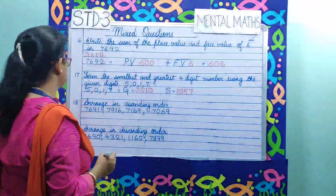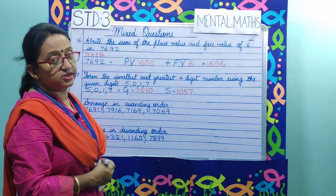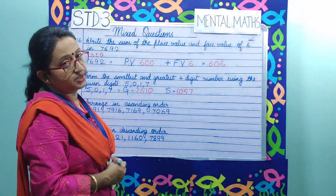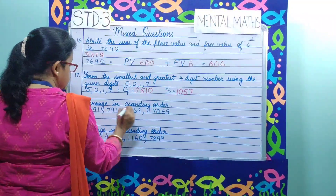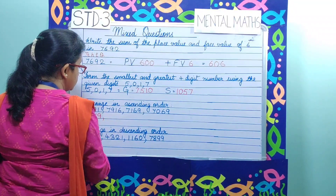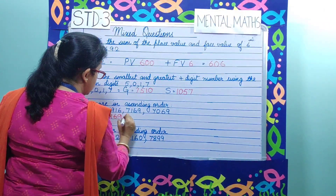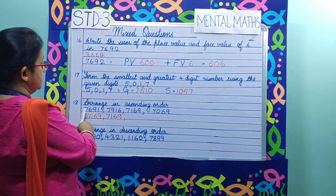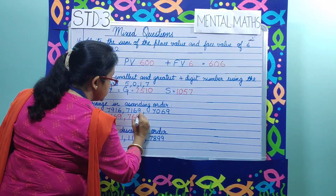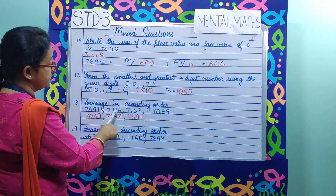Question number 18. Arrange in ascending order. Ascending order means arranging numbers from smaller to bigger. The smallest number is 7,069, then 7,169, then 7,691, and the last is 7,916.